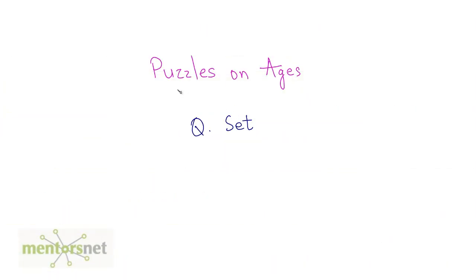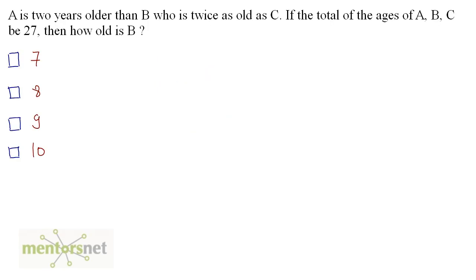Hey guys, let us solve some more puzzles on ages in this video. Get started with the first question. A is 2 years older than B, who is twice as old as C. If the total of ages of A, B and C be 27, then how old is B?